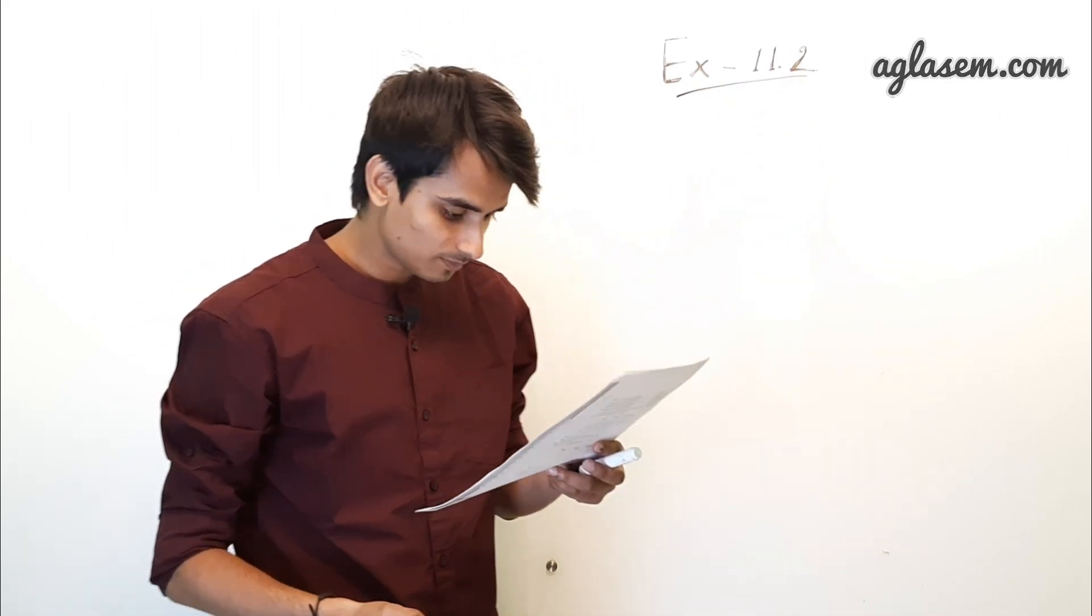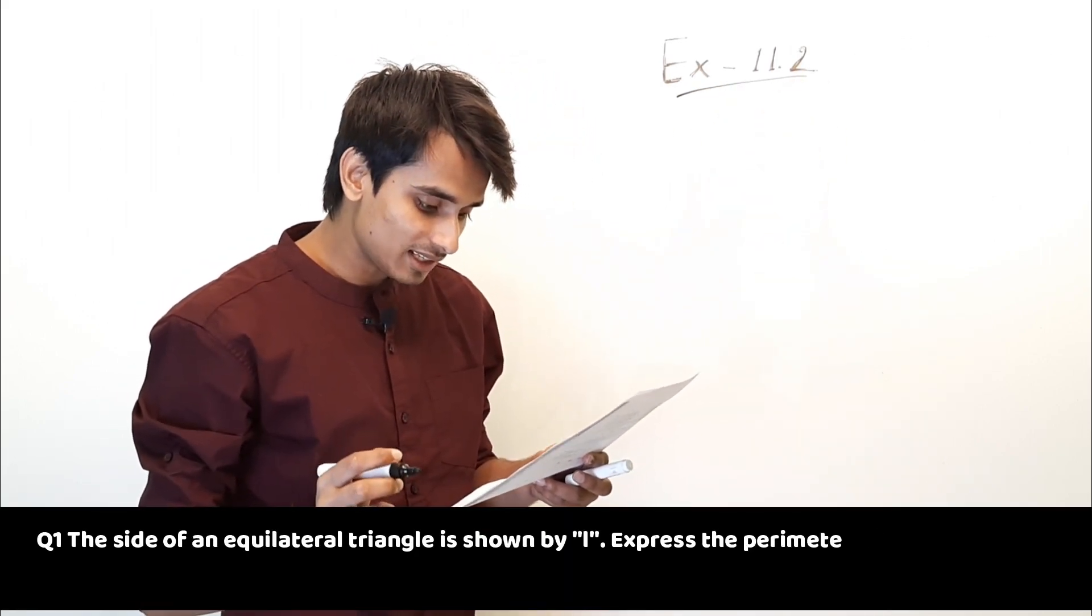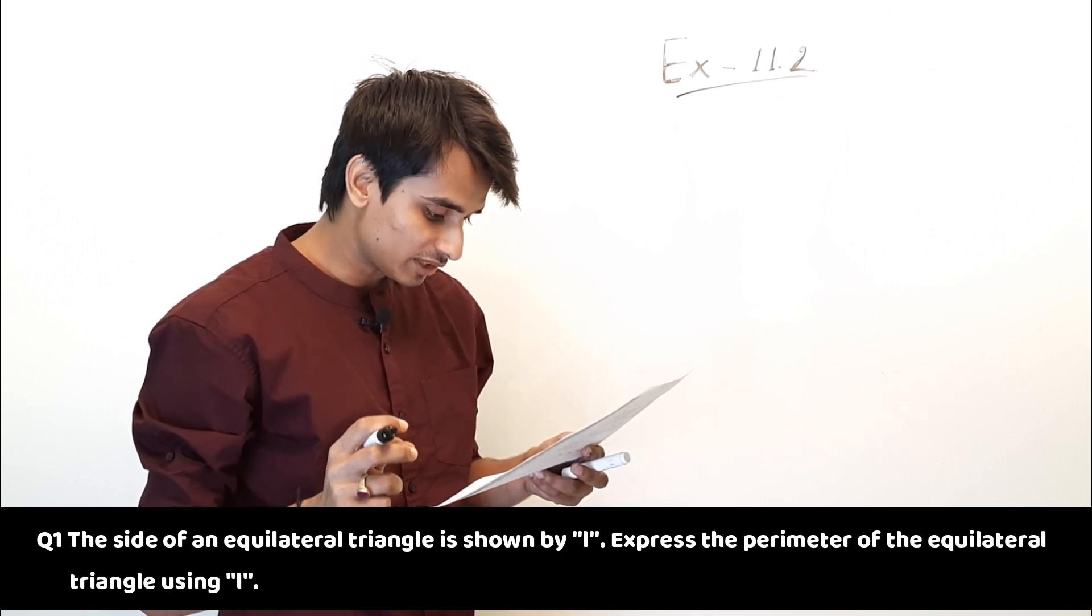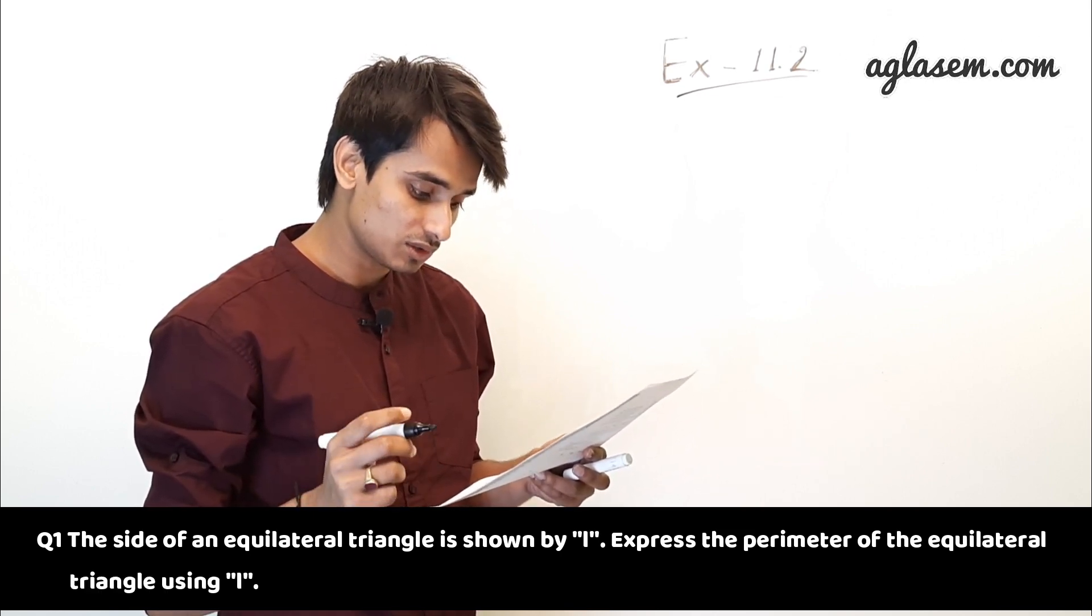So first question: The side of an equilateral triangle is shown by L. Express the perimeter of the equilateral triangle using L.